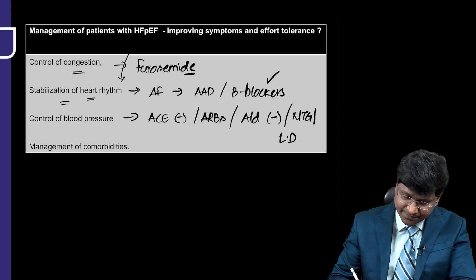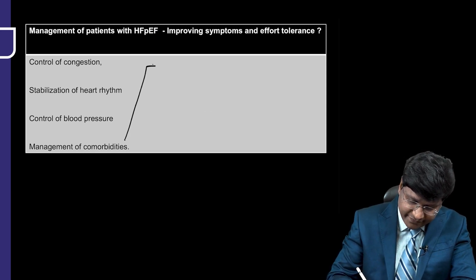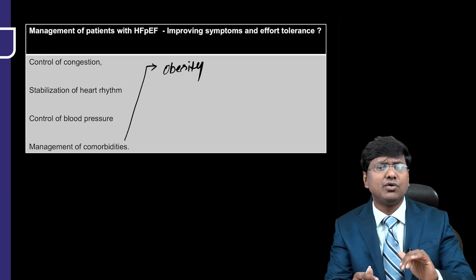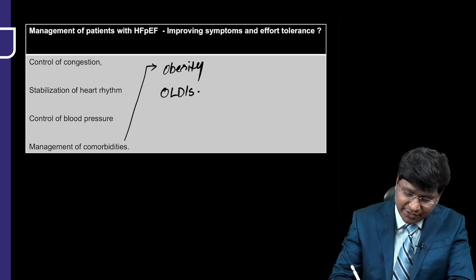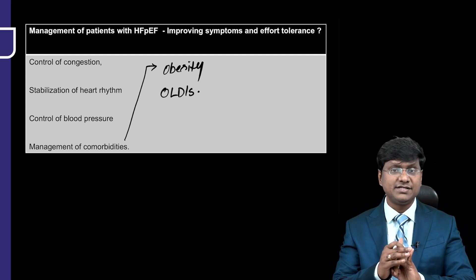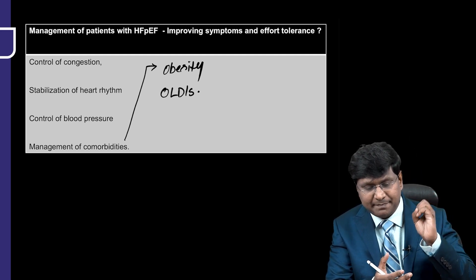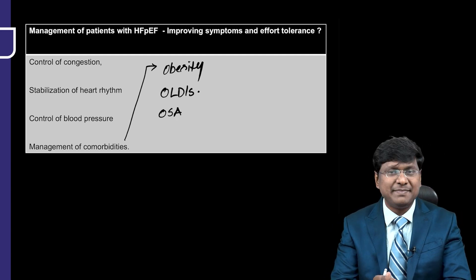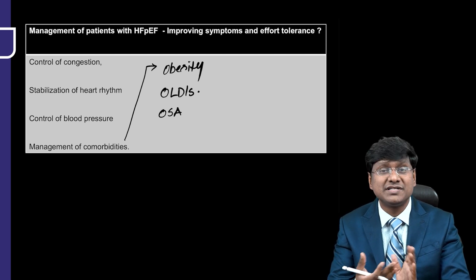Finally, management of comorbidities is important. If the individual is obese, ask them to cut down weight, because obesity increases afterload on the heart. If the individual has obstructive lung diseases like COPD or bronchial asthma, treat them — otherwise the individual will develop cor pulmonale and precipitation of underlying heart failure. Obstructive sleep apnea should be treated with non-invasive ventilation — BiPAP or CPAP.